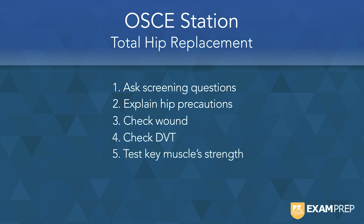Next, you want to test key muscle strengths — this is really important and there are some tricky ones. For example, do you want your patient marching while sitting on the bed? That might break a hip precaution, so think about what you would do instead.